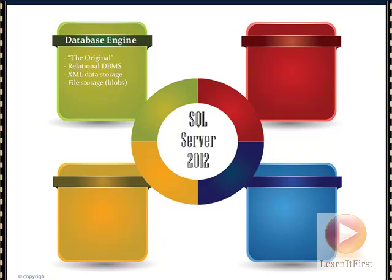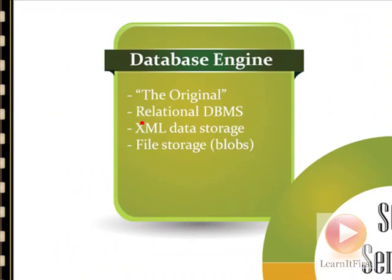Let's walk through the four components that make up SQL Server 2012. Component number one is called the database engine. This is your traditional product — SQL Server. In the old days, in the 90s, when somebody said 'I want to use SQL Server,' they didn't know this idea of the database engine — this was what SQL Server was. SQL Server started out as the database engine back in the 90s, really back in '89, and then it evolved to add the other three parts. This is the original; this is what started it all. When you think of a database and you think of Microsoft SQL Server, this is probably what you're thinking of.